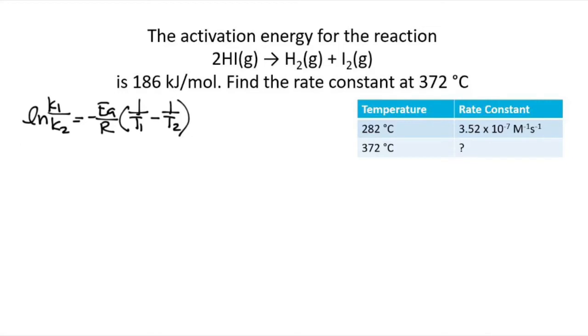So what are we trying to find? We're trying to find K and for algebra reasons we're going to choose to make this K1. It doesn't really matter which one is K1 and T1 or which one is K2 and T2, as long as you're consistent. So we're going to say that 282 is number 2 and 372 is number 1. And so now we're going to start filling things in.